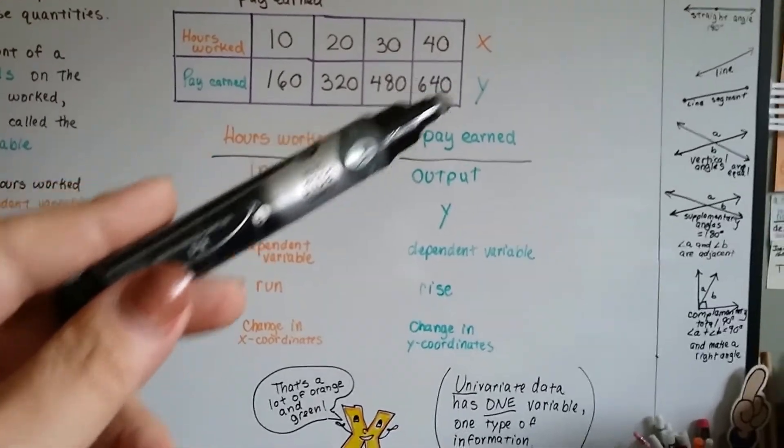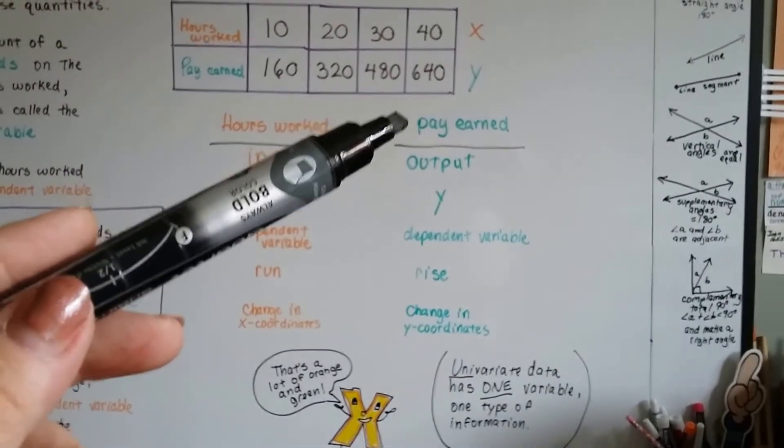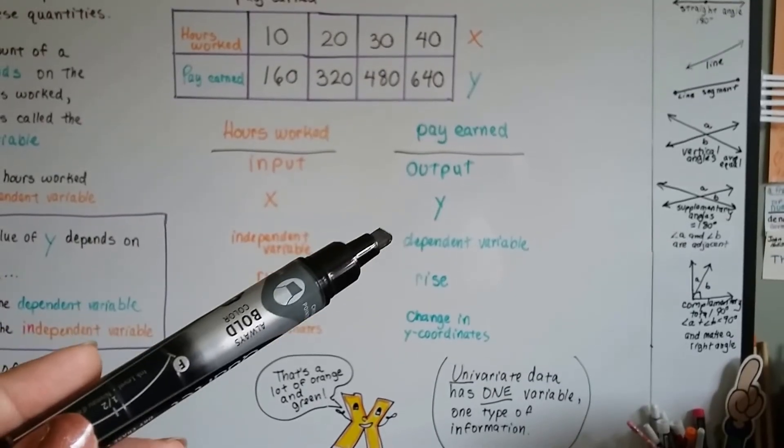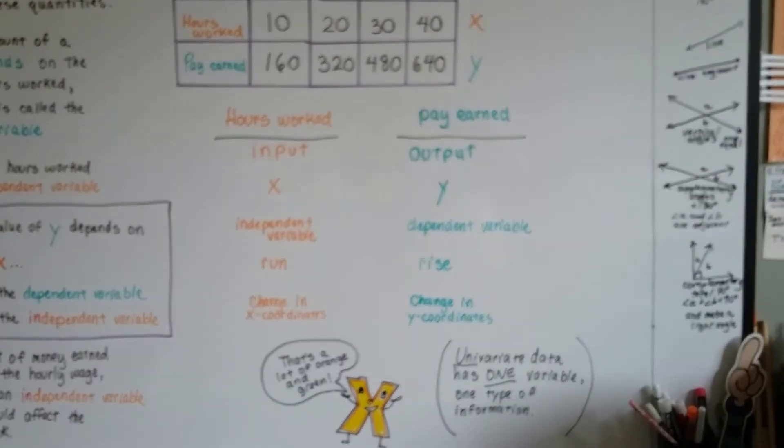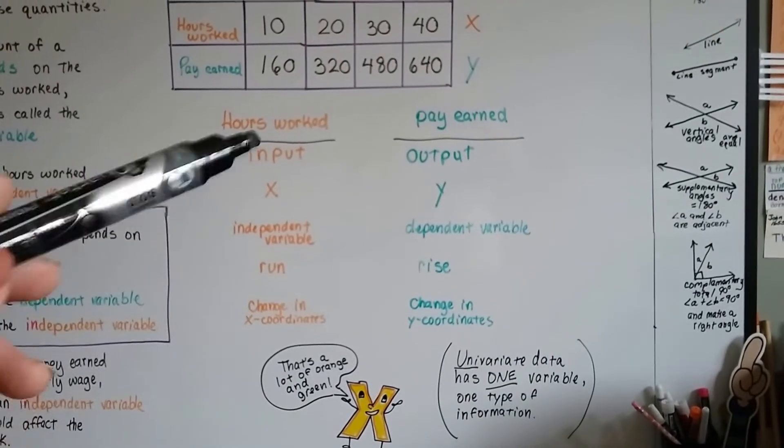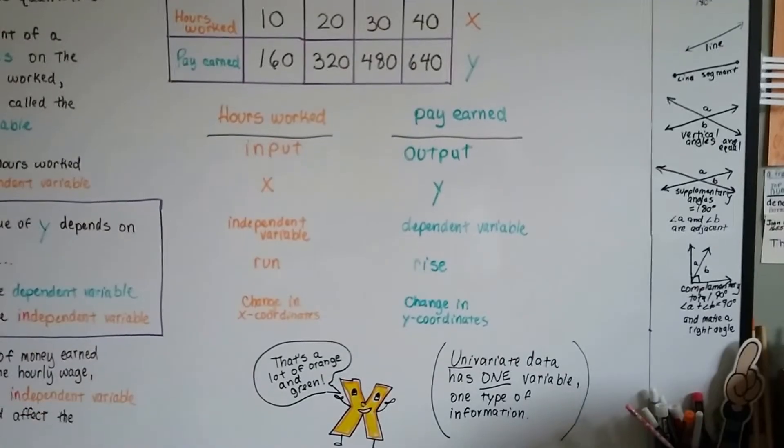And the y, the green, that's the pay earned. The output. The y. The dependent variable. The rise. The change in y coordinates. These are all basically the same thing, and these are all basically the same thing.